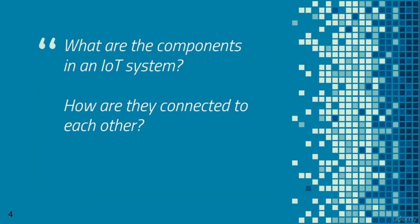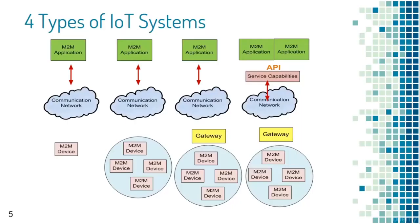There are two main points of discussion: what are the main components of an IoT system, and how are these components connected to each other? The picture shows components and their interplay from a high-level perspective. On the left side you see simple systems where one or a collection of M2M devices are exchanging data with M2M applications over the communication network.